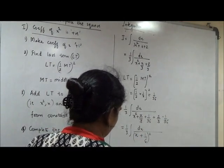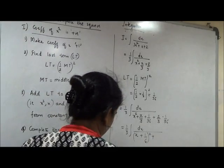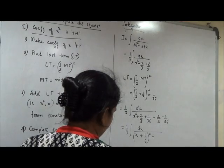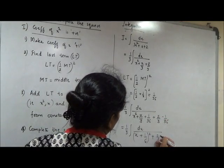And this constant term now you have to simplify. Here 36 is there. To make this 36, I should multiply with 12. In the numerator, you will get 24, 24 minus 1, 23 by 36.